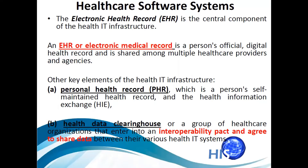Other key elements of health information technology infrastructure include the PHR or Personal Health Record. This is a person's self-maintained health record where, as a patient, you can see your own health information — your doctor's diagnosis and your laboratory results — digitally, through the use of the system. Before, what you would typically see were printed paper laboratory results, but with PHR, you can view them digitally.